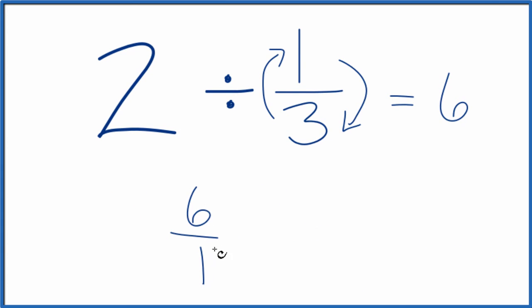So we take six over one, which is just six, and we're going to multiply that by one-third. So six times one, that equals six. One times three, that equals three. And six over three, that's the same as two, which is what we got before.